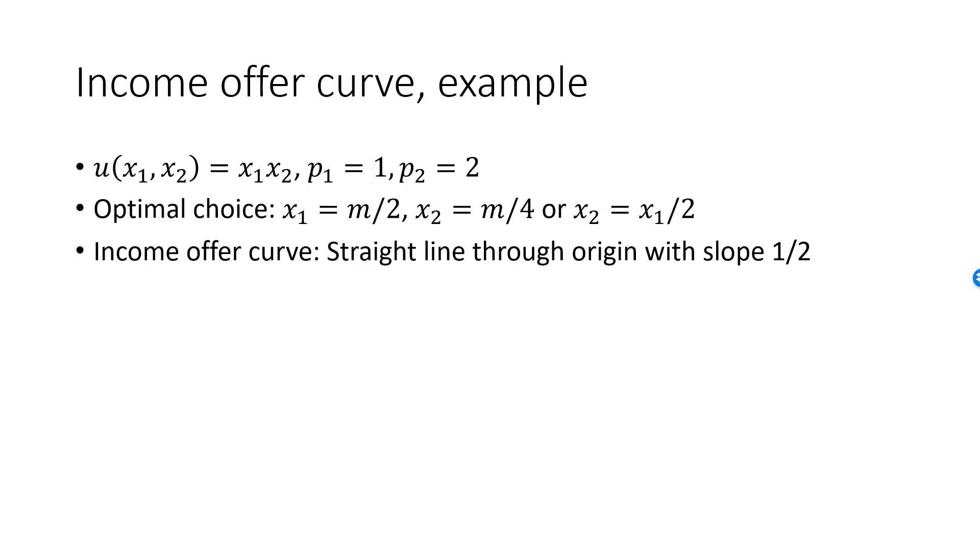Therefore, the Income Offer Curve will be a straight line through the origin with slope 1 half. If we create a graph with the optimal demand of good one on the X axis and income on the Y axis for some given prices, then we get what is called an Engel curve.